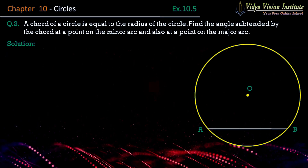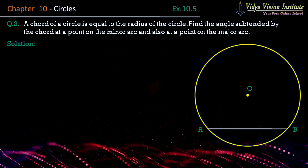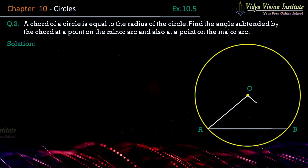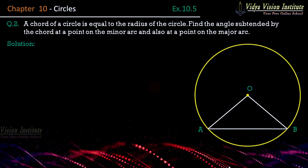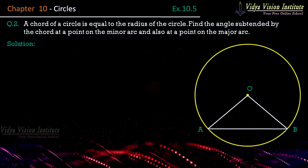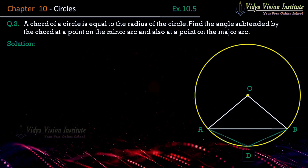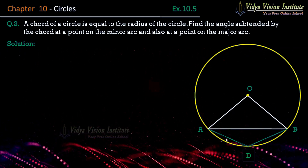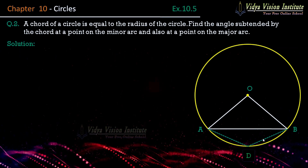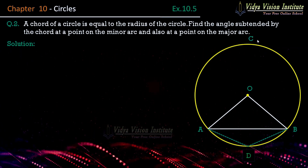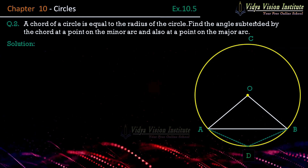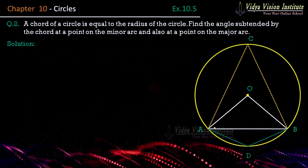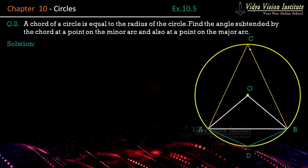Yahan pe AB ek chord hai jiski value is centre ke radius ke barabar hai — that is OA is equal to AB is equal to OB. Ab is arc se yahan pe koi ek point lenge D. Yahan pe ADB aapas mein milayenge, to yeh jo angle hai angle ADB, yeh angle subtended by the chord at the minor arc hai. Aur yahan pe ek point lenge C, jo angle subtended by the chord at the major arc hoga.